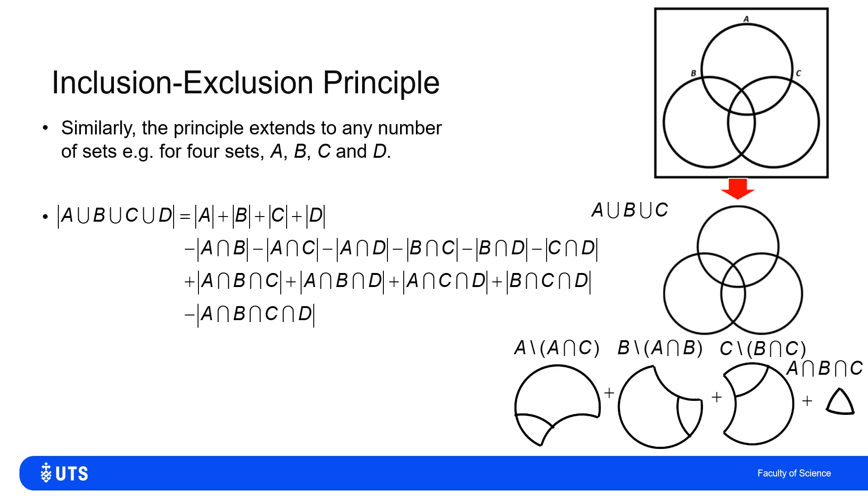Similarly, if I had five sets, I'd add the singles, subtract the doubles, add back in the triples, subtract all of the four-folds, add back in the five-fold. So I've got this reversing sign where I'm constantly correcting, but then over-correcting, and then correcting, and then over-correcting at each stage.